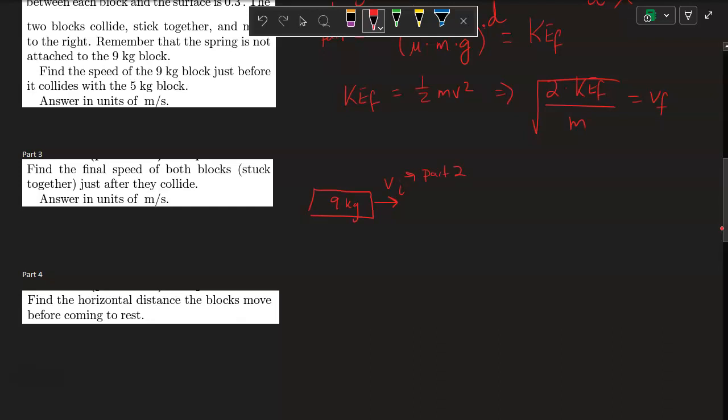The final velocity in part 2 is now the initial velocity in part 3, and it's going to collide inelastically with the less massive block, the 5 kilogram block. So this will be conservation of momentum.